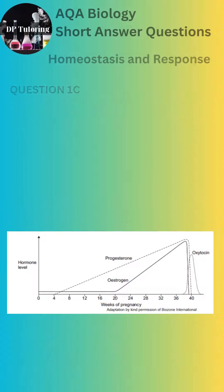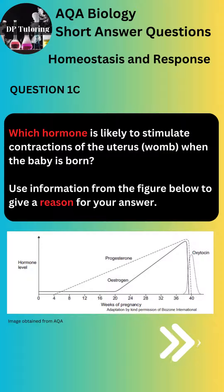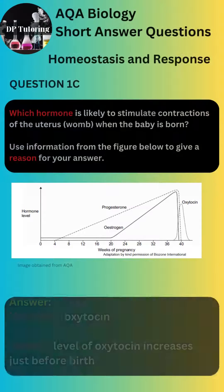For Part C, you were asked to identify which hormone is likely to stimulate contractions of the uterus — the womb — when the baby is born. Use information from the graph to give a reason for your answer. The answer is on screen.